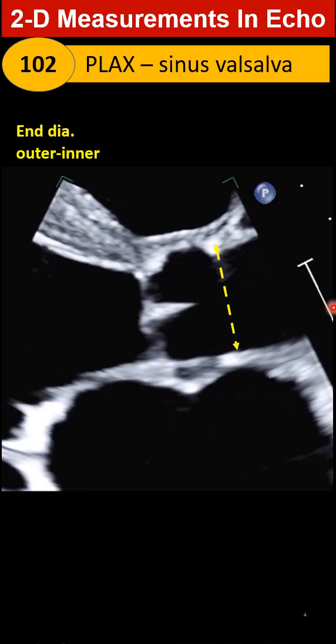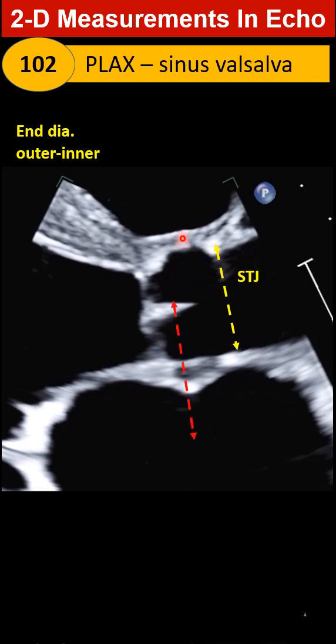For the sinotubular junction in diastole: outer to inner at the sinotubular junction, then at the coronary sinus, outer to inner at the sinus wall.